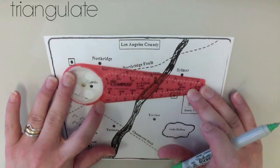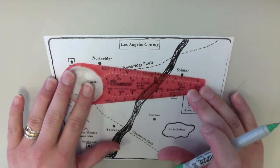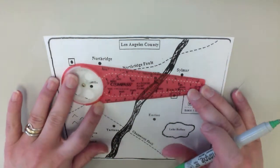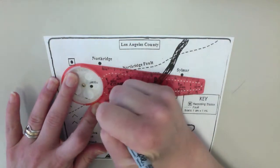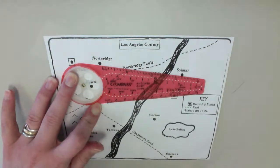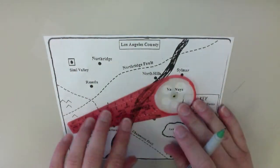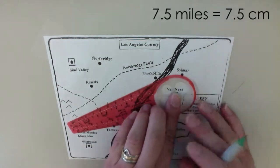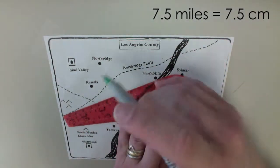To find the location of an epicenter, you must triangulate. You look at your data and you notice that Van Nuys detected an earthquake 7.5 miles away. So you draw a point 7.5 centimeters away from Van Nuys in any direction.